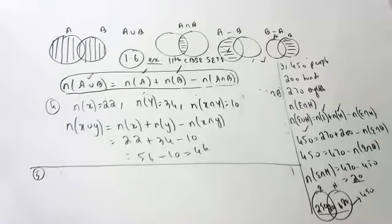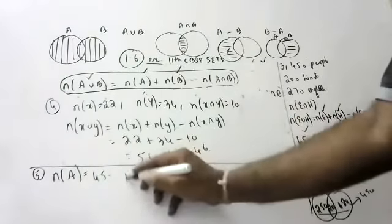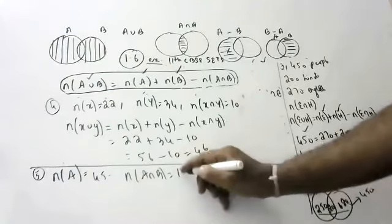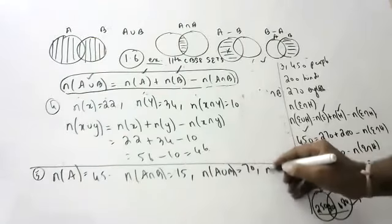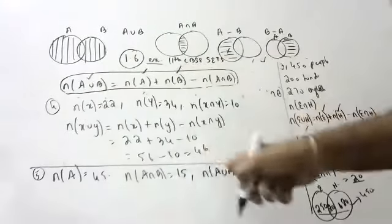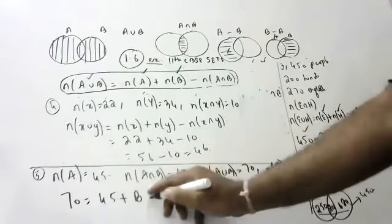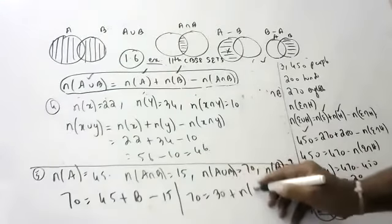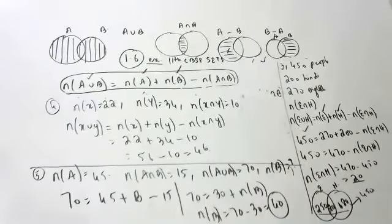Next question: A and B are two sets. N(A) is 45, N(A∩B) is 15, and N(A∪B) is 70. How many elements are in B? Using the formula: 70 equals 45 plus N(B) minus 15, so 70 equals 30 plus N(B), giving N(B) equals 70 minus 30, which is 40. So 40 elements are present in B.